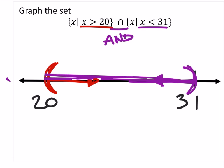So, as it turns out, they won't intersect at 20, and that's because 20 is not included in this inequality right here.